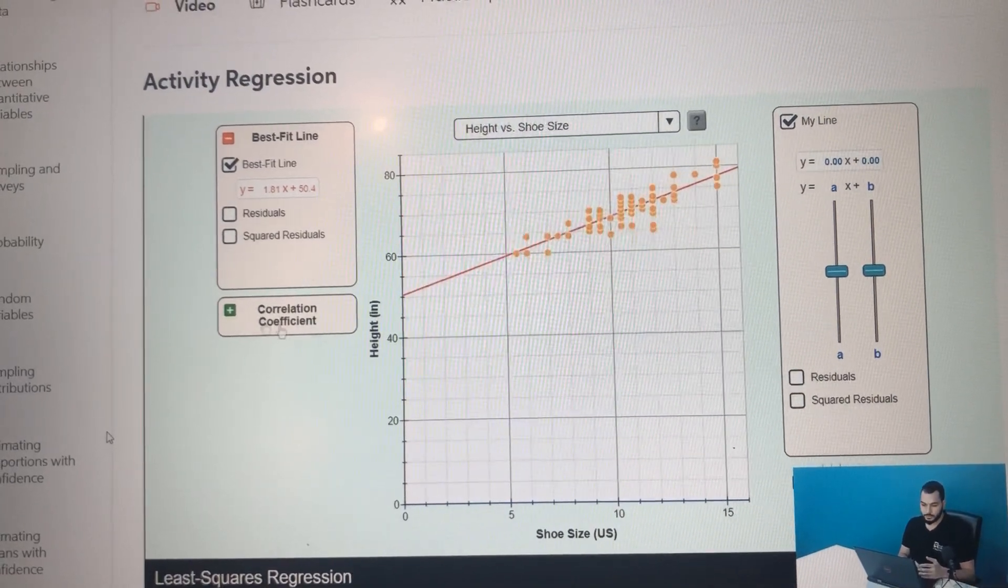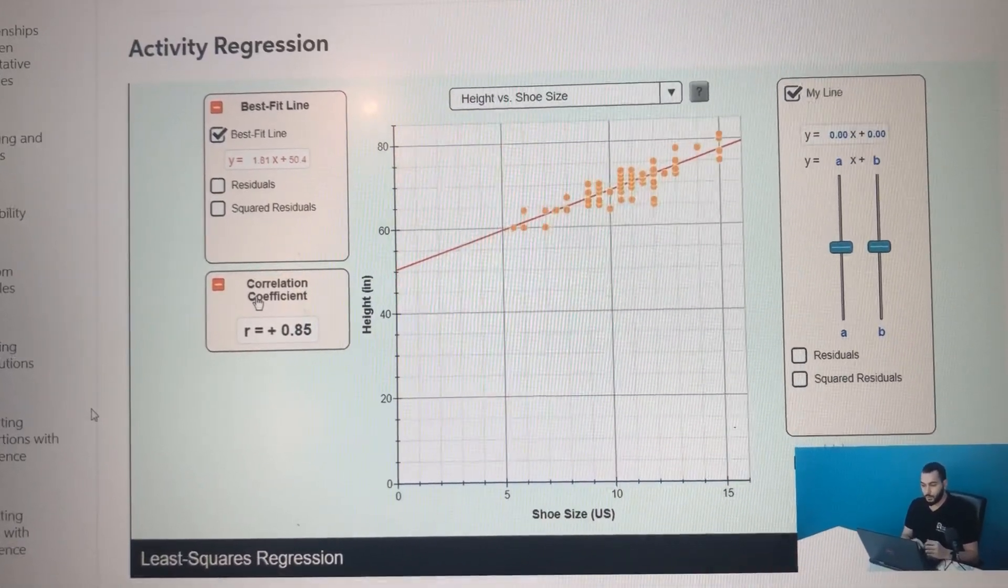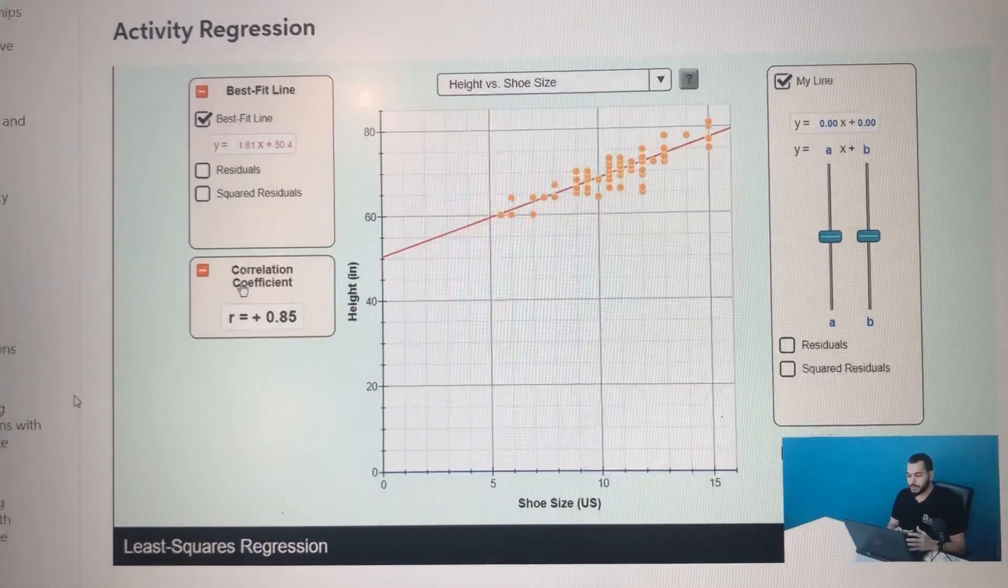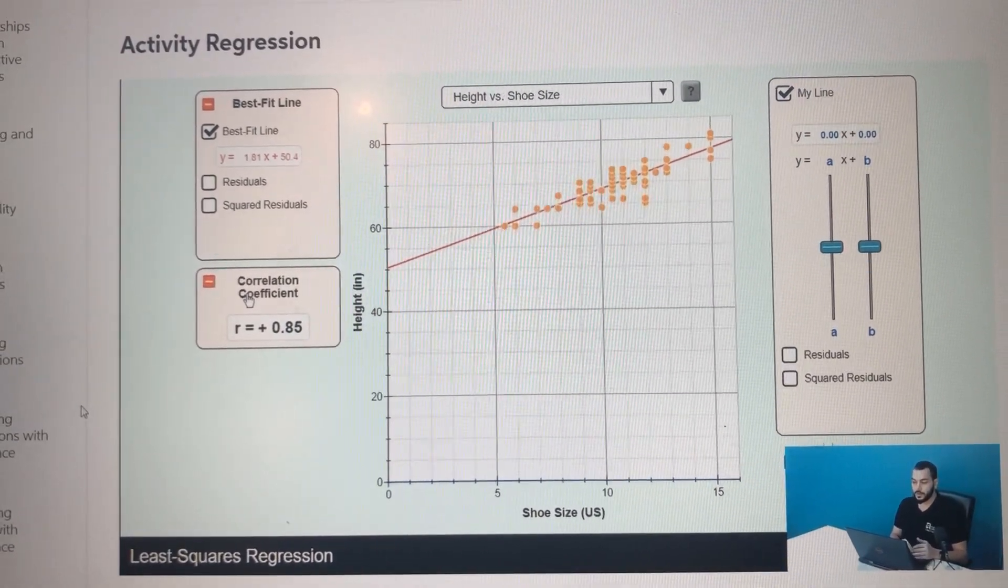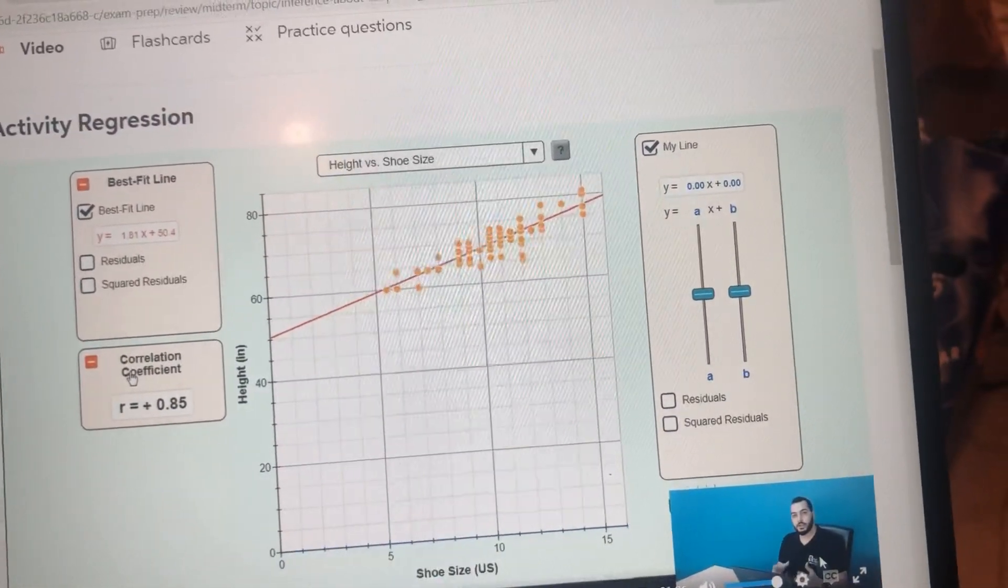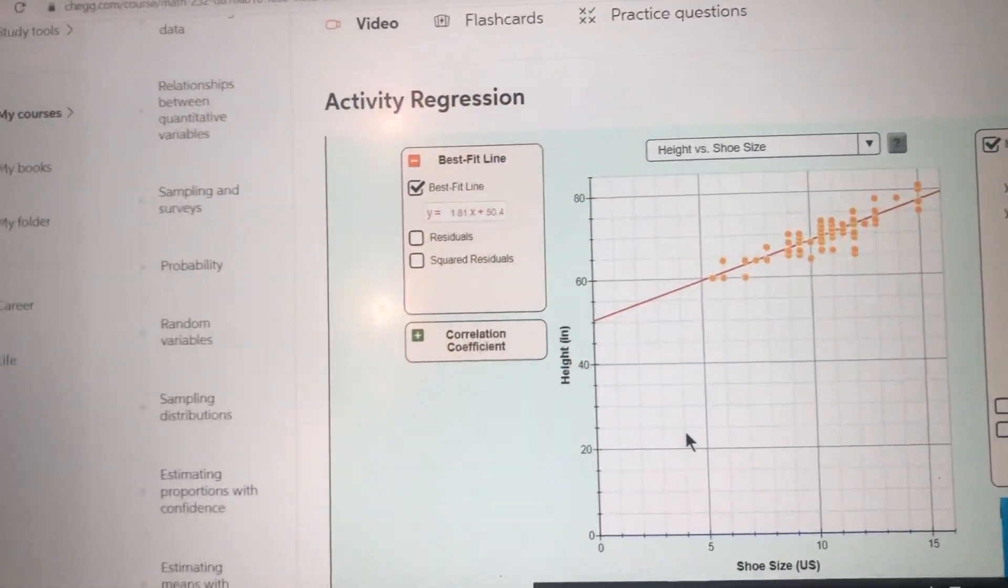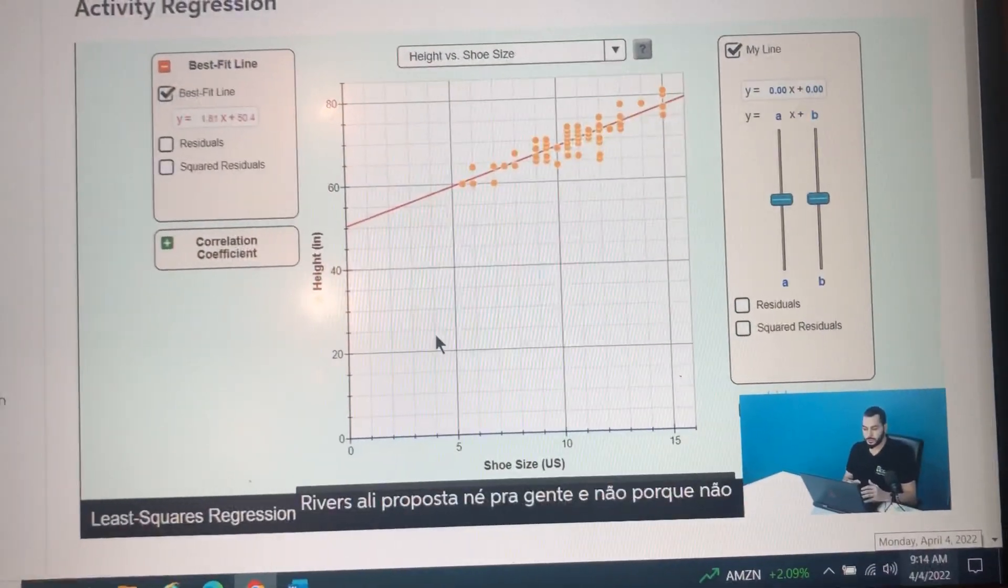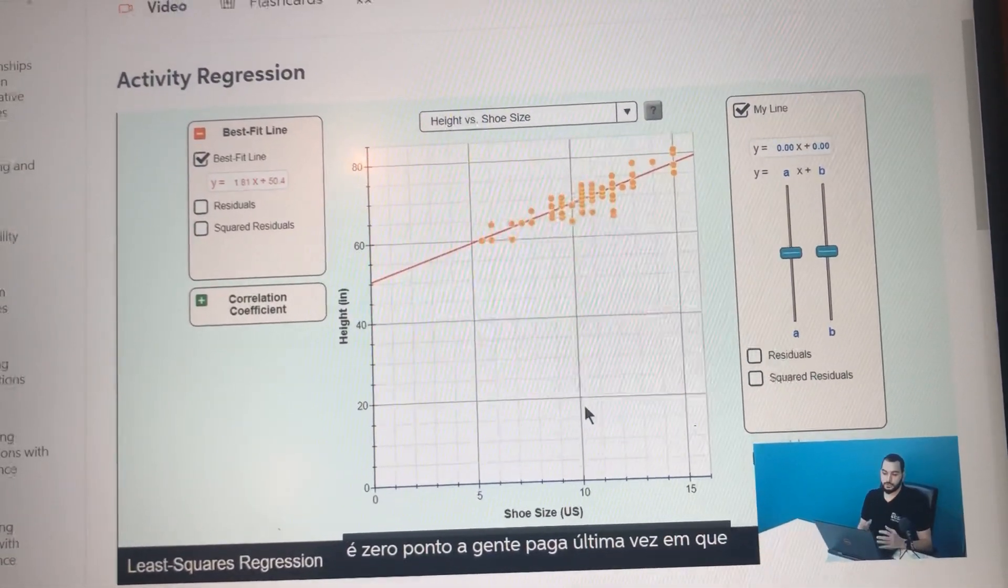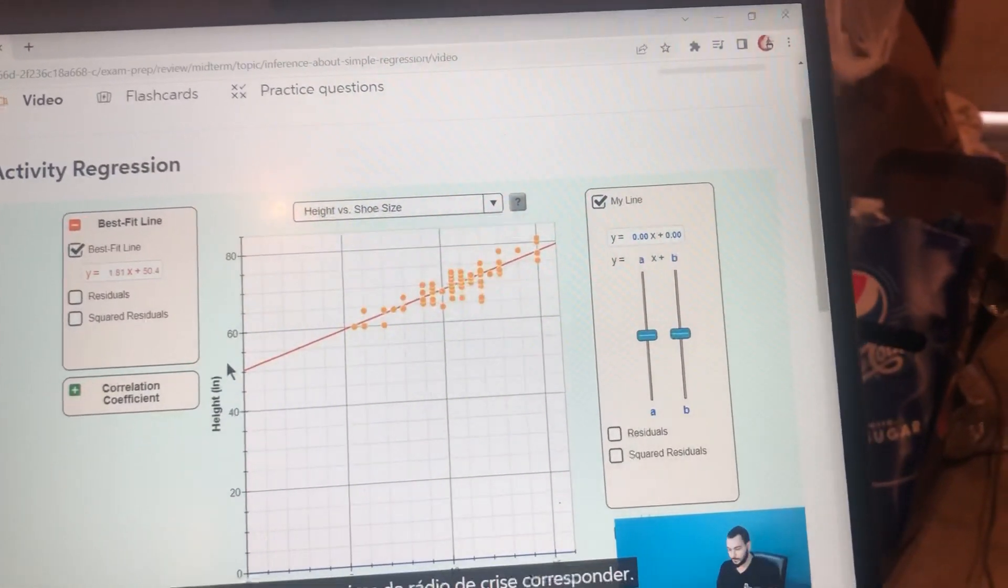Let's now press on the correlation coefficient. Here you will see a number which is 0.85. What does this number represent? In simple terms, the correlation coefficient is a number that measures the relationship between two variables. The closer it is to one, it means it is proportionally related, and the closer the number to minus one means there is a high inversely proportional relationship. In our case, the number is 0.85, which means that if the shoe size increases, the height will increase correspondingly.